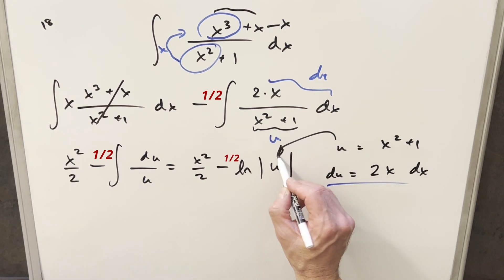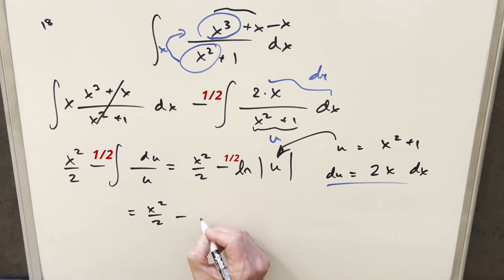We'll back substitute it right here. So putting it all together, we're going to have x squared over 2 minus natural log, absolute value, x squared plus 1.